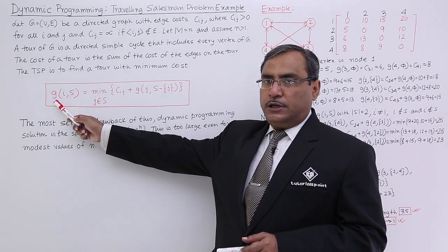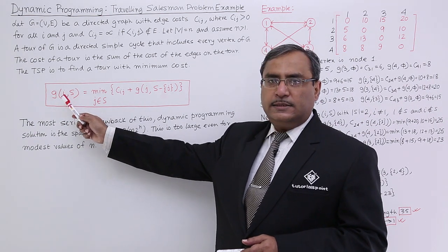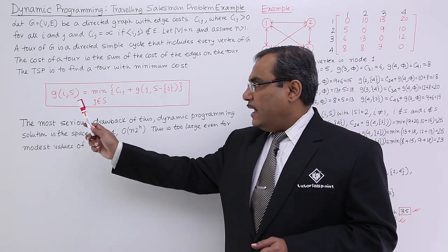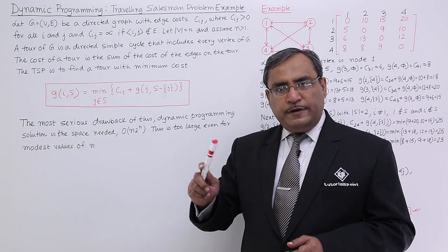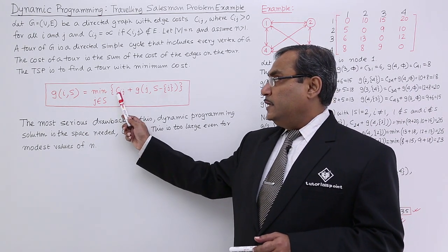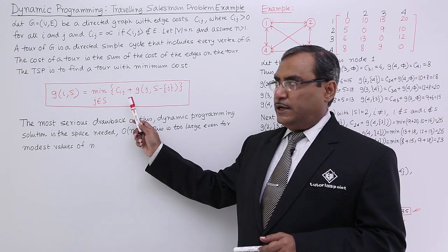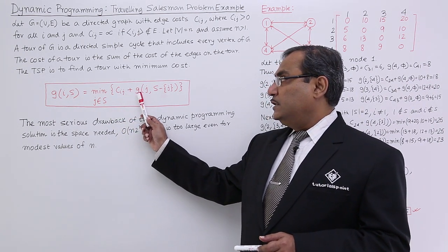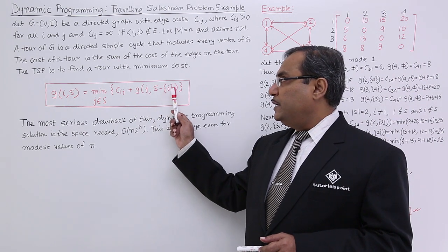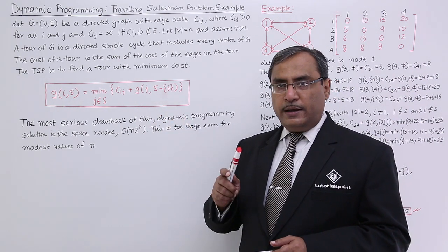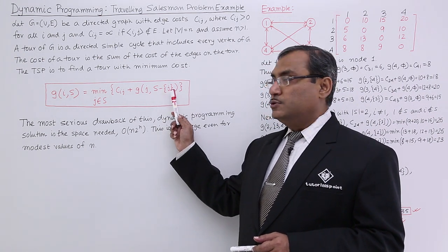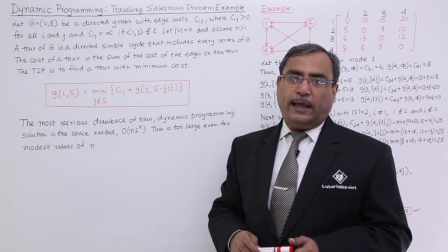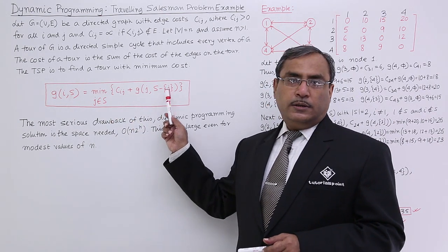Here g is a function which is having two input arguments. One is i, that is I am at the ith node, the travelling salesman is at the ith node. S means set of all unvisited nodes. Then Cij is the cost between node i to j, j is that node which belongs to s which was untraversed plus g(j). Remaining number of untraversed nodes will become s minus j. The cost will be minimum accordingly the j has to be calculated. In this way, this particular relation will work.